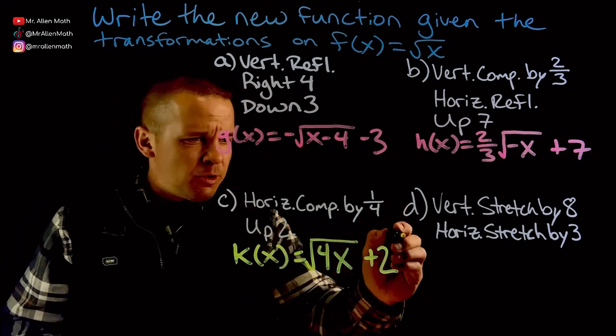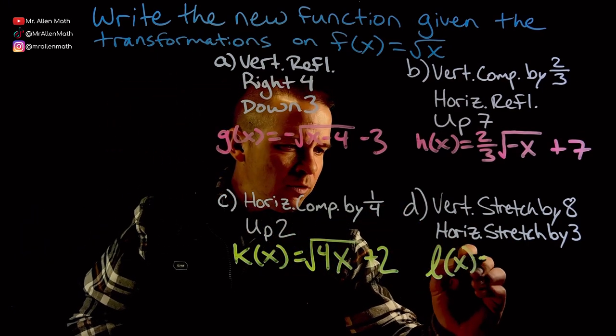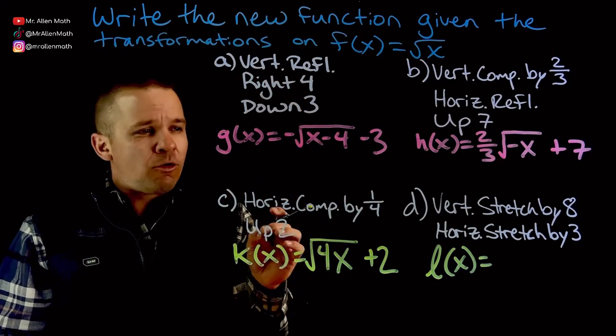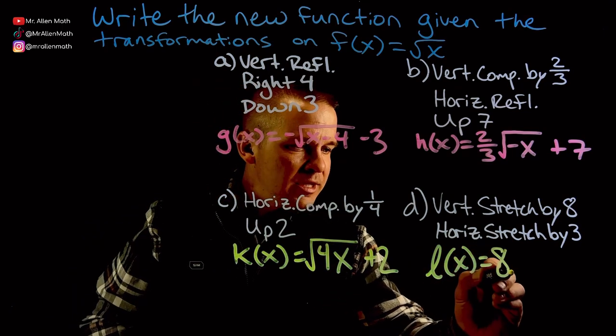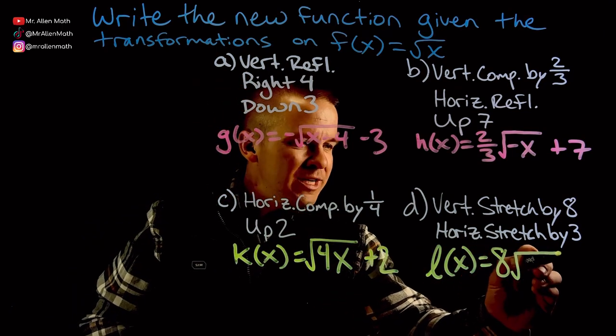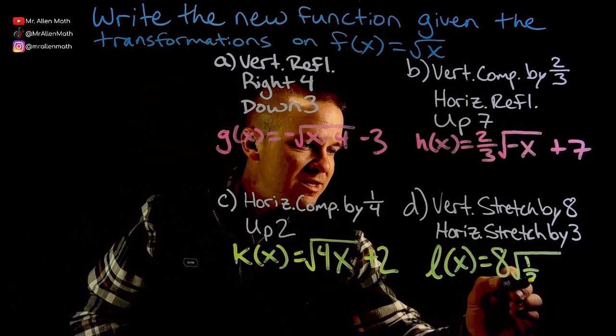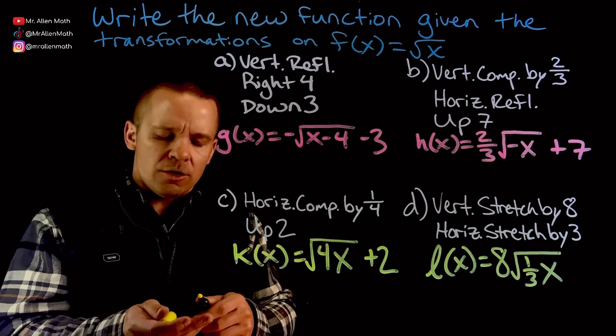And we've got one more. Let's go with L of x, right? H-I-J-K-L of x equals, we got vertical stretch by a factor of 8 and a horizontal stretch by a factor of 3. So it's going to be 8 on the outside, but then on the inside, we have a horizontal stretch by 3. That's going to be 1 third on the inside times x. We've got to do the reciprocal of that.